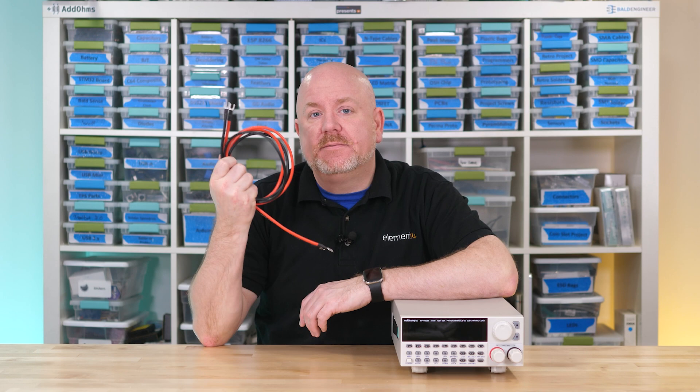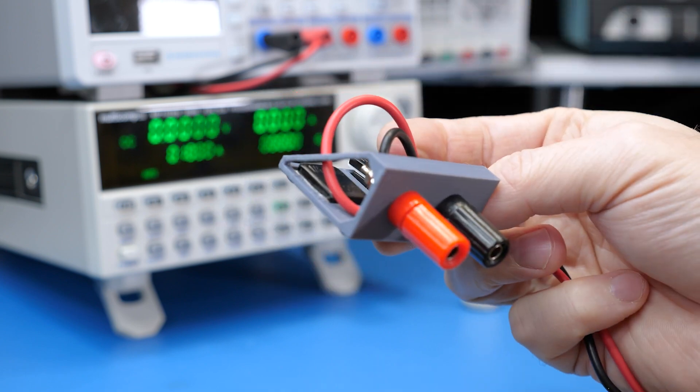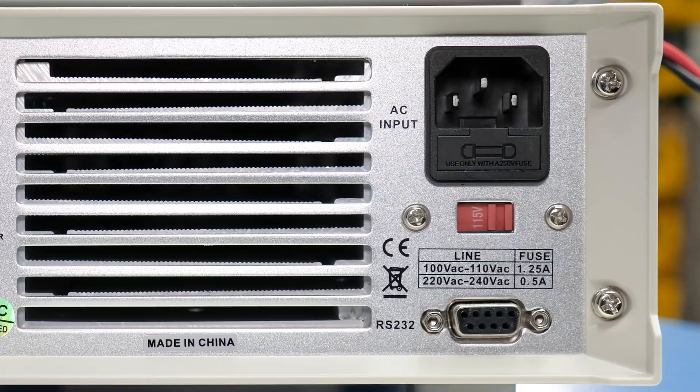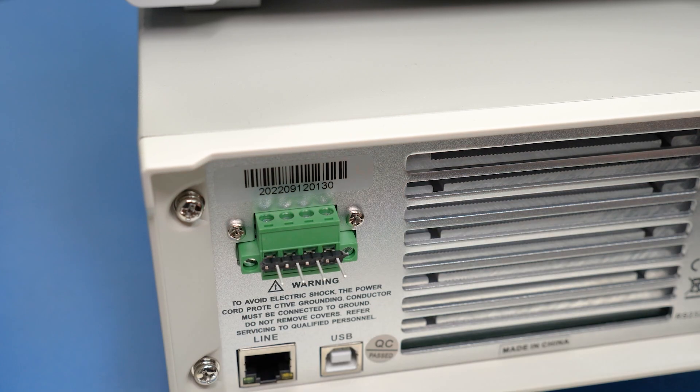which are not 4mm banana jacks. Those posts, plus the spade connector cables that it comes with, are good for high currents, like tens of amps. However, I found it slightly annoying to work with at lower power, which caused me to make this little adapter to make changing cables easier. On the back are a USB, LAN, and serial port for remote programming. There are also screw terminals for a remote sense and a trigger signal.